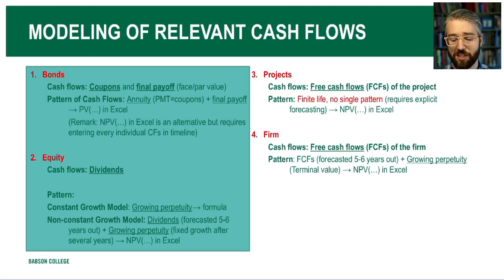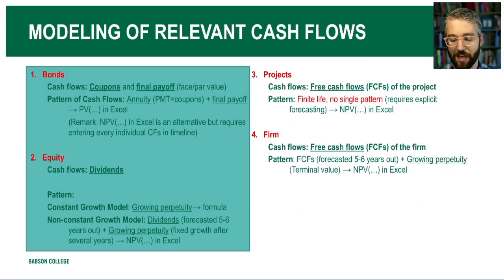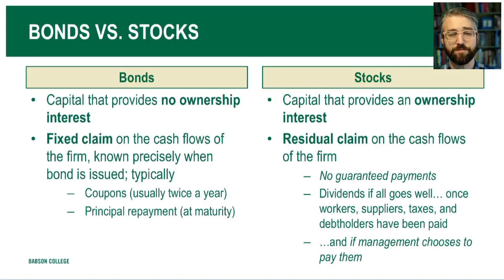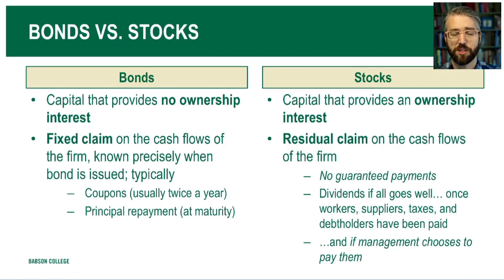We could also use these DCF-type tools to value projects, discounting the free cash flows associated with those projects, or to value firms as a whole by discounting all of the free cash flows the firm ever generates. More to come on those topics. So, a quick overview of the difference between bonds and stocks—necessarily a very high-level discussion that sweeps under the rug a lot of complexity about the rich range of different types of financial assets and securities that firms might issue to raise capital, but these archetypes provide a useful framework.